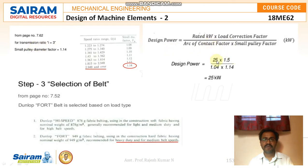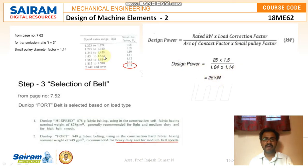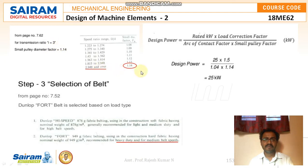The rated kilowatt is 25, load correction factor is 1.5, arc of contact factor is 1.04, and the small pulley factor is 1.14, obtained from the table based on transmission ratio i greater than 3. Substituting all values, the design power is calculated as 25 kilowatts.